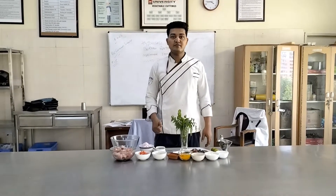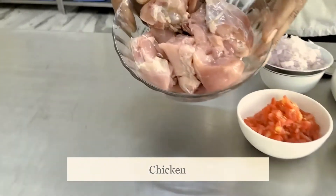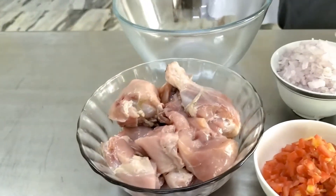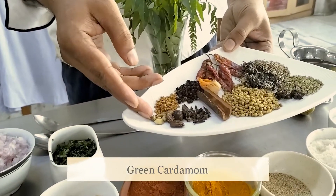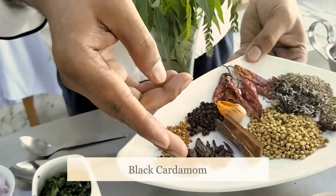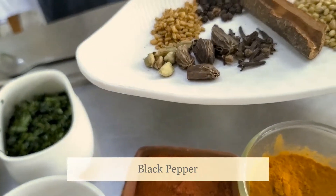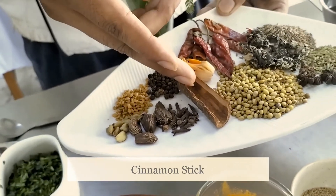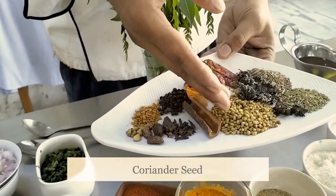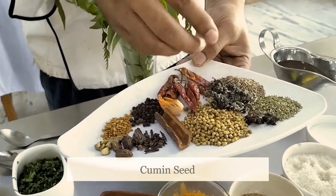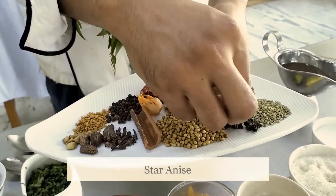Let's go over the ingredients required for making Chettinad chicken — it is a very spicy dish. First, the chicken itself. For the spices, we have: green cardamom, black cardamom, clove, fenugreek seeds, black pepper, cinnamon stick, mace, red chilli, dry red chilli, coriander seeds, cumin seeds, stone flower (called Pathar ke phool), and star anise.